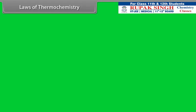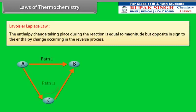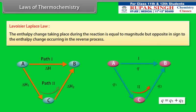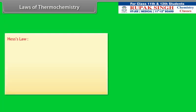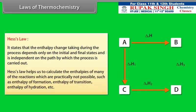Laws of thermochemistry: Lavoisier-Laplace law states that the enthalpy change during a reaction is equal in magnitude but opposite in sign to the enthalpy change occurring in the reverse process. Hess's law states that the enthalpy change during a process depends only on the initial and final states and is independent of the path by which the process is carried out. Hess's law helps calculate enthalpies of reactions that are practically not possible, such as enthalpy of formation, enthalpy of transition, and enthalpy of hydration.